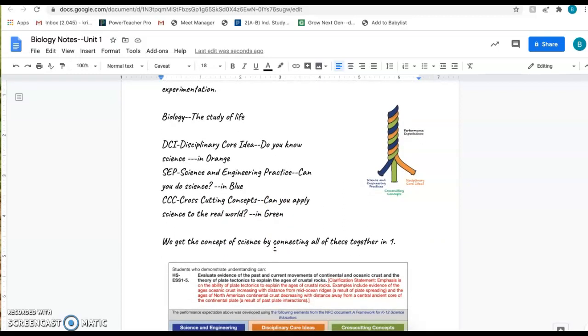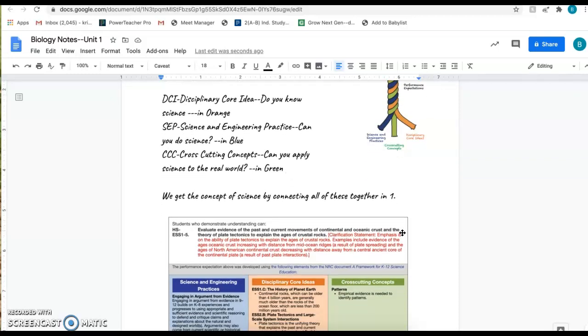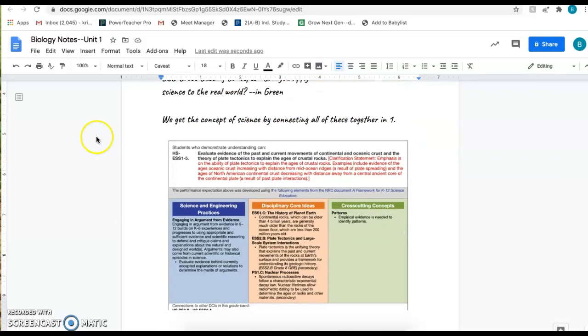Through these cross-cutting concepts, we get the whole overall concept of science by connecting all three of them together. You can see over here you have a rope, and the three strands of the rope are the science and engineering practices, cross-cutting concepts, and disciplinary core ideas. All those together are science as a whole.